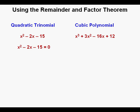And related to those expressions, this quadratic equation, x squared minus 2x minus 15 equals zero, is probably going to be easier to solve than this cubic equation, x cubed plus 3x squared minus 16x plus 12 equals zero.